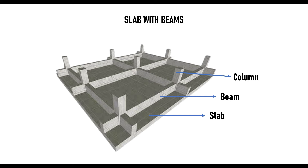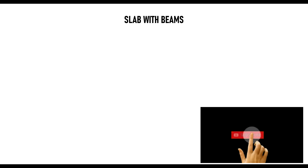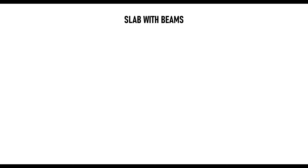Before we go into those methods, let us talk about where we use the slab-with-beams raft foundation. The first use case is when there is an uneven distribution of load — when the load is not evenly distributed amongst the columns, using a slab with beams is very helpful. This type of foundation is also used for medium structures where the soil is very soft, or in cases where there are heavier loads and the soil condition is good.